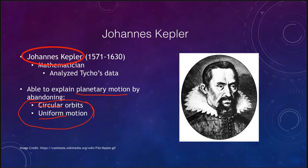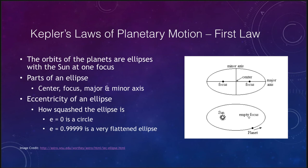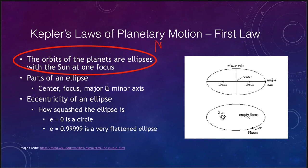Based on his studies of Tycho's data, Kepler gave us three laws of planetary motion. His first law says that the orbits of the planets are ellipses with the sun at one focus. This was the first time non-circular orbits had been proposed. An ellipse is like a squashed circle — while a circle has just a center, an ellipse has two foci. The sun is located at one focus and the other is empty. This means that as a planet orbits, sometimes it is closer to the sun and sometimes it is farther away.